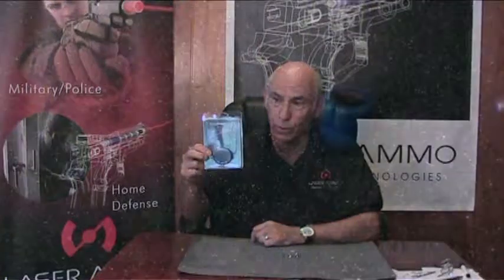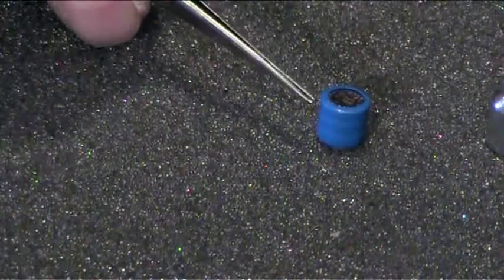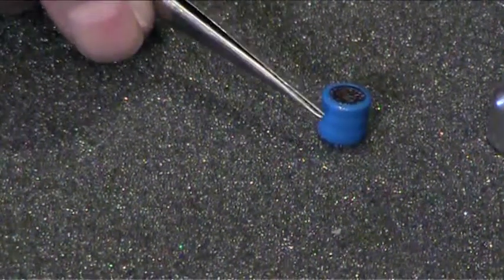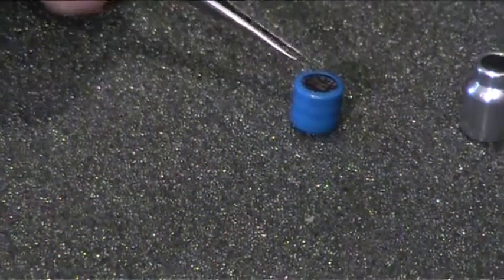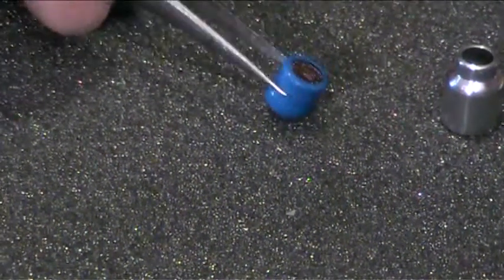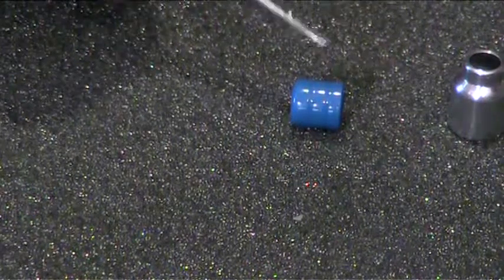The Laser Ammo batteries come in a package of three like this. This is the Laser Ammo battery. It is three batteries stacked together and held in place by shrink wrap. Do not remove the shrink wrap.